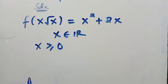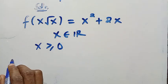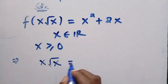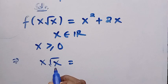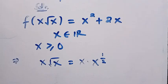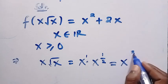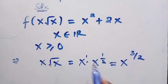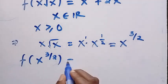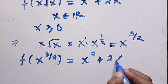So let's get into finding f of root x. Before we find f of root x, we have to know what f of x is. To do that, we consider x multiplied by root x. We rewrite x root x as x raised to the power of 1 multiplied by x raised to the power of 1 over 2. By applying the rule of indices — same base, we add the powers — we get x raised to the power of 3 over 2. So the function becomes f of x raised to the power of 3 over 2 equals x squared plus 2x.